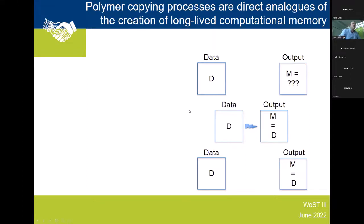If I've got two bits of data in my system, one holds data and one is a memory that initially holds nothing, I can bring them into contact, electrically connect them, use the connection to set the memory equal to the data, and then switch off that connection. I've made a copy of my data in my memory — at some level this is what you do every time you save a file: you make a permanent copy that no longer speaks to the data in order to maintain its state.